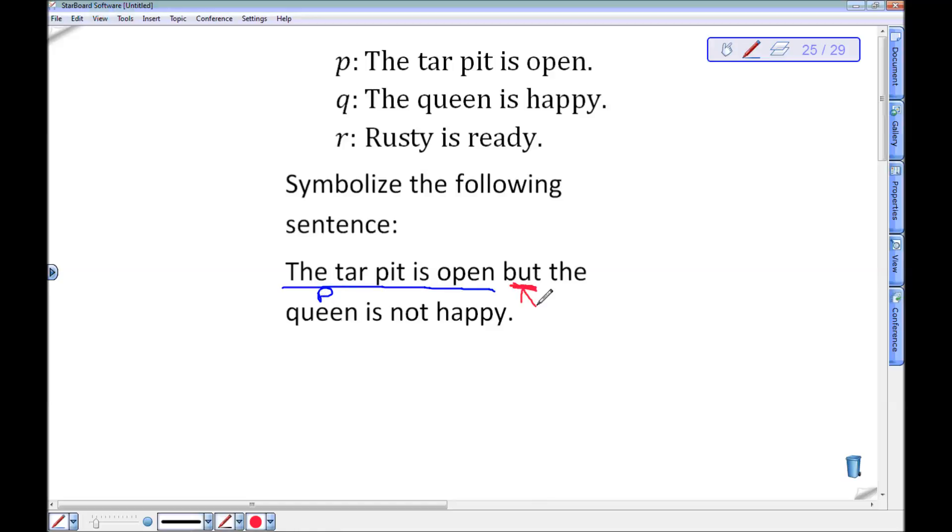Okay, so I want the conjunction. The queen is not happy, so the negation of the queen is happy, so not Q. So this statement is P and not Q. My and got a little wavy there. We want it to be pretty straight. So P and not Q is how it would symbolize the tar pit is open but the queen is not happy.